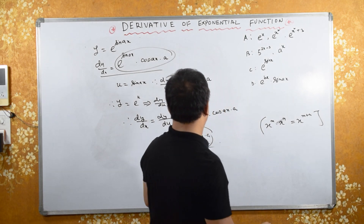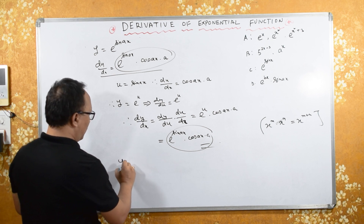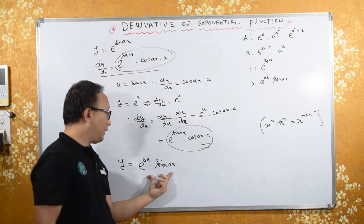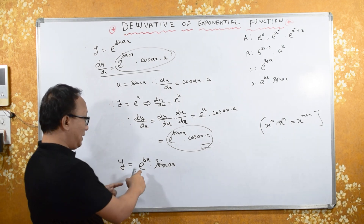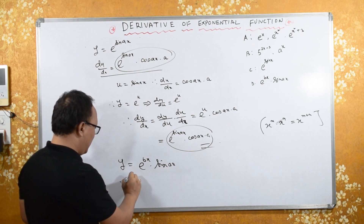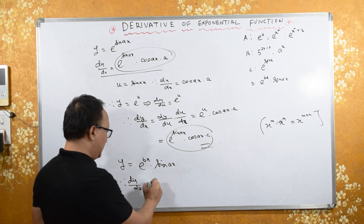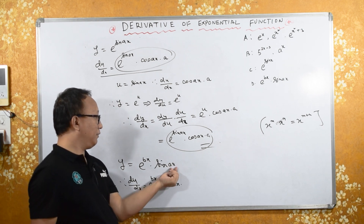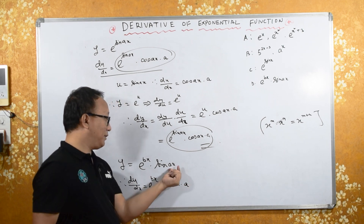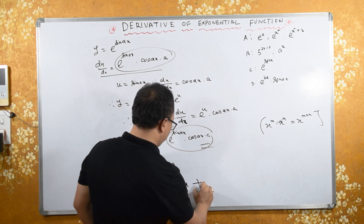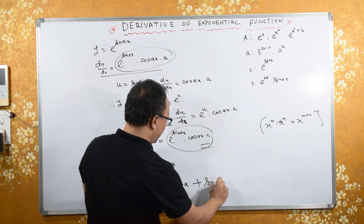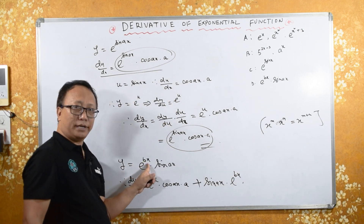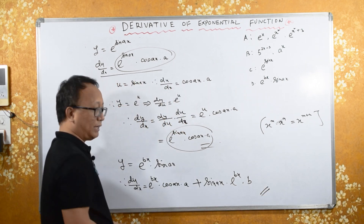If y equals e raised to bx into sin(ax), we apply the product rule since we have two functions. dy/dx equals e raised to bx into d/dx of sin(ax), which is cos(ax) into a, plus sin(ax) into d/dx of e raised to bx, which is e raised to bx into b.